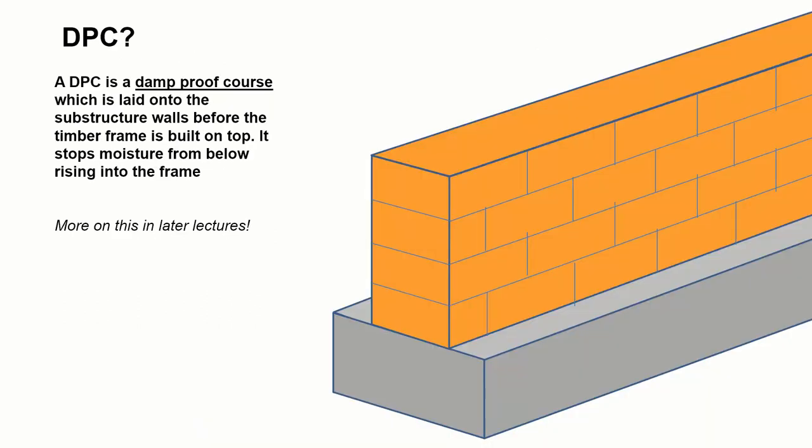So what is a DPC? We'll be talking a little bit more about this in future lectures. But effectively a DPC is a damp proof course, which is a plastic material, semi-rigid, which is rolled out on top of substructure walls. And it prevents any moisture from below, from the saturated walls, from rising up through capillary action and reaching the timbers. Any timbers which are exposed to moisture have the potential to rot. So the DPC is a method of protecting the timber frame above.